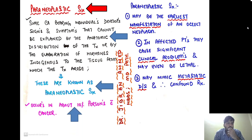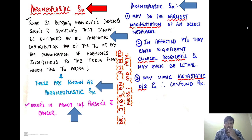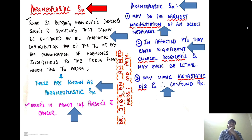Paraneoplastic syndrome occurs in about 10% of individuals with cancer. It might be the earliest manifestation of an occult neoplasm — meaning a neoplasm which is hiding, which has not revealed itself or come under detection. In affected patients, paraneoplastic syndrome can cause significant clinical problems and sometimes may be fatal. It might also mimic metastatic disease, creating confusion and thereby confounding the treatment.